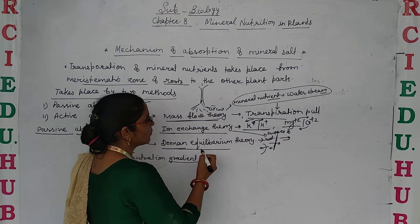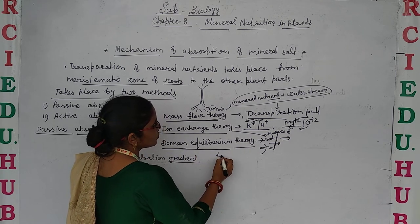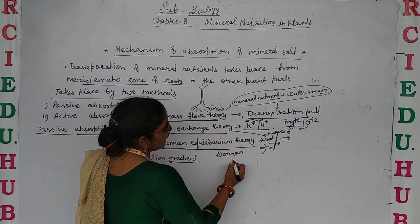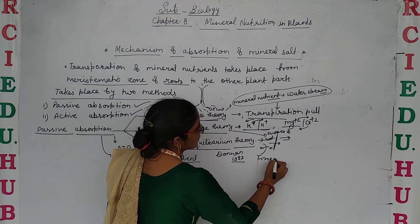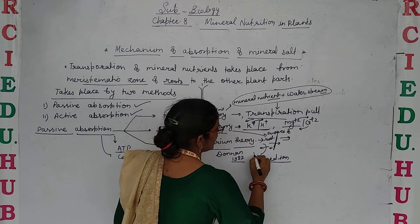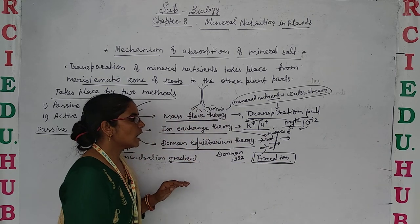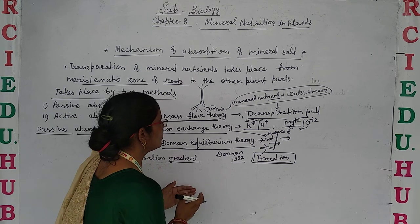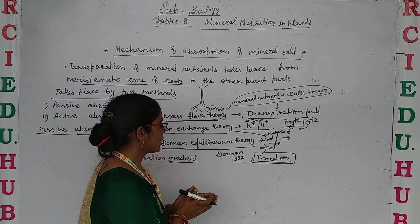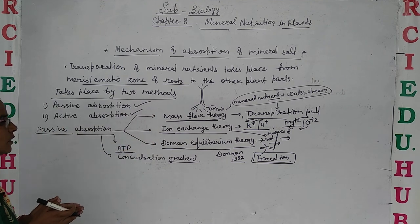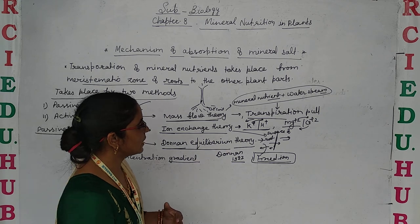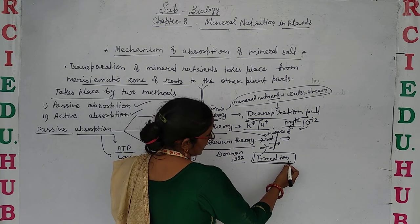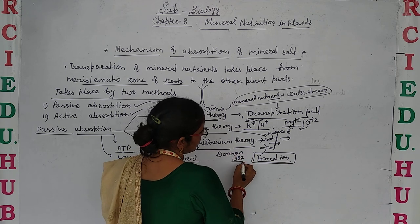The third theory is the Donnan equilibrium theory, given by Donnan in 1927. It is mainly proposed for fixed ions — that is, how immobilized or non-diffusible ions maintain equilibrium. Under this theory, ions are exchanged between the cell membrane or inside the cell.